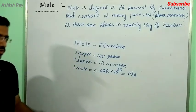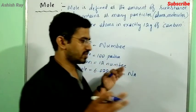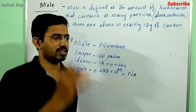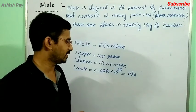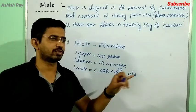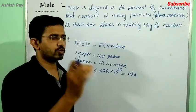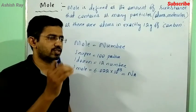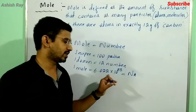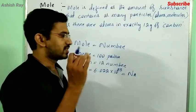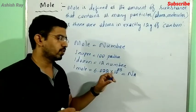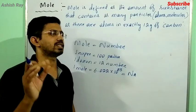That number is equal to Avogadro's number, represented by N_A. Mole is nothing, just a number equal to 6.022 into 10 to the power 23. In some textbooks you will find 6.023, but you should take 6.022 into 10 to the power 23.